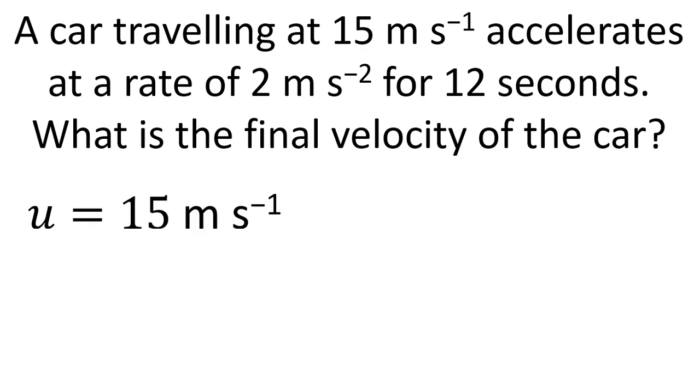We should write out what we know. We know that the initial velocity U is 15 metres per second, acceleration is 2 metres per second squared, time is 12 seconds. And we should also write down the thing that we want to find out. V, the final velocity, is the thing we're trying to work out.